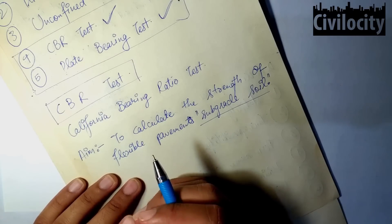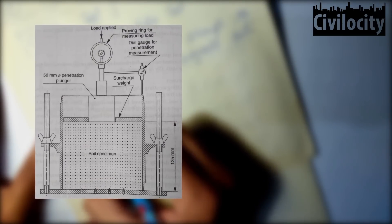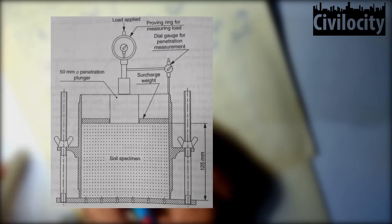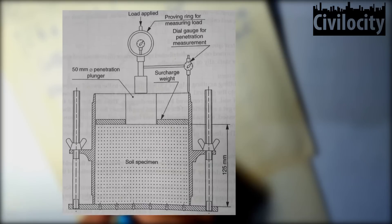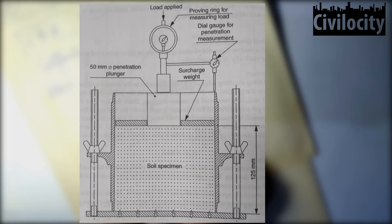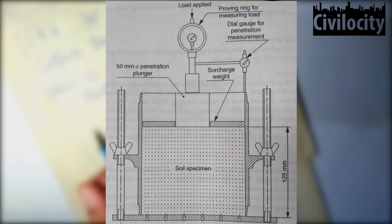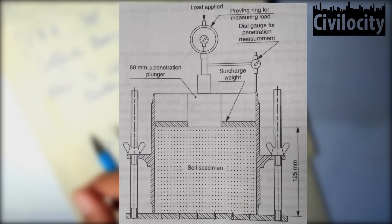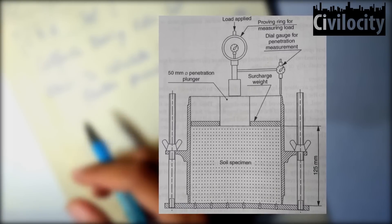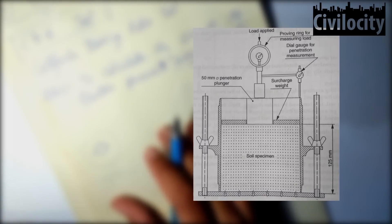You can clearly see that there is a pedestal of this testing machine, above which there is a base plate, above which there is a mold. Inside the mold, soil is filled up to 127 mm. When the soil is filled and compacted, a surcharge weight is kept on the soil. The surcharge weight has a hole, and above it there is a cylindrical plunger of 50 mm diameter. On the left of the plunger there is a dial gauge to measure the penetration.